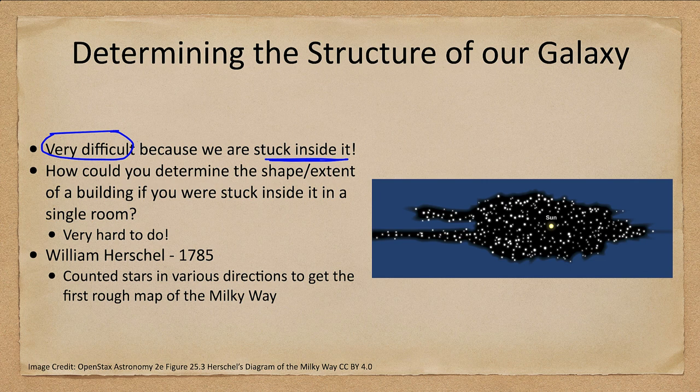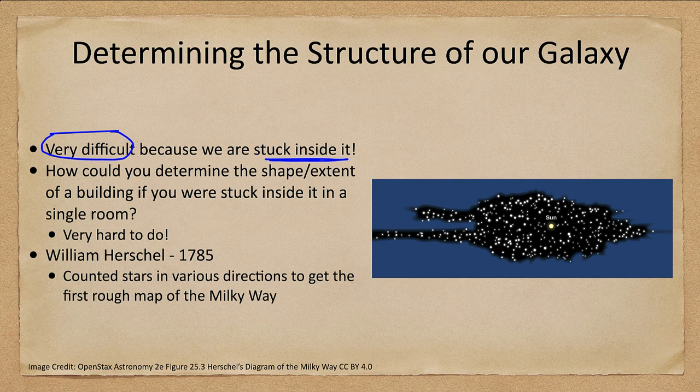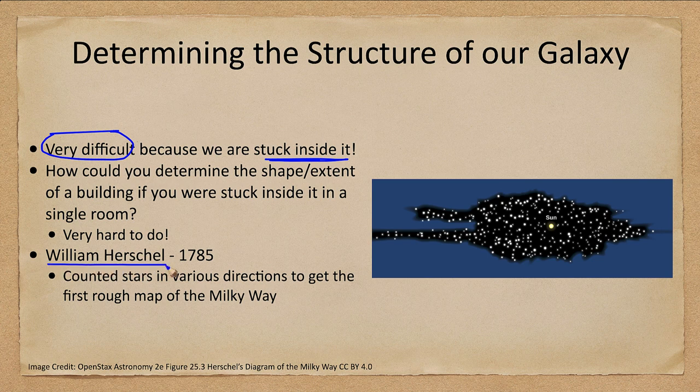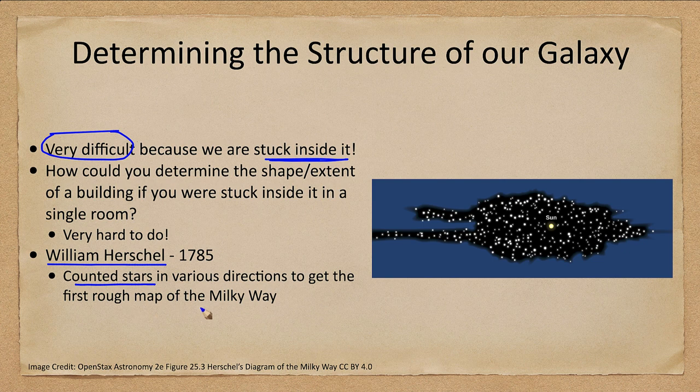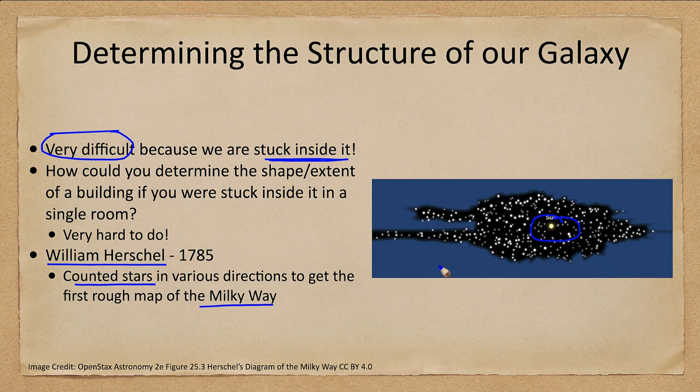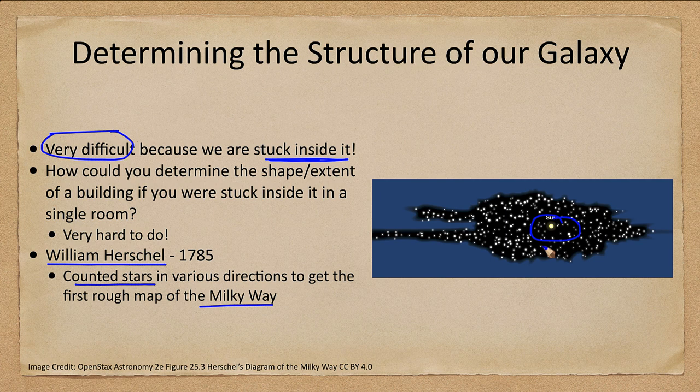Now the advantage of the galaxy is that it is somewhat clear and we can actually see to certain ways along it. William Herschel in 1785 measured the galaxy and made a map, and he counted stars in various directions to give us the first rough map of the galaxy. You note that it put the Sun close to the center, and that's just because we're only seeing a portion of the galaxy and not the entire galaxy.